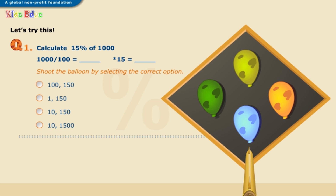Let's try this. Shoot the balloon by selecting the correct option. Calculate fifteen percent of one thousand. One thousand divided by one hundred equals ten, and multiplied by fifteen equals one hundred and fifty. The correct answer is: ten and one hundred and fifty. Great job.